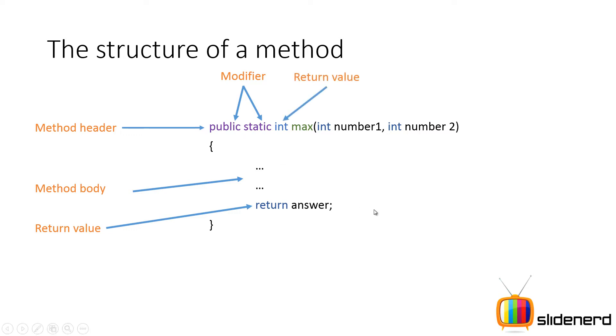So next let's talk about the return value. This determines the type of value that you're returning over here. Now for example, if answer is a boolean, then you'll be returning boolean over here. But in our case the answer is a variable of type integer, so our return value is integer.